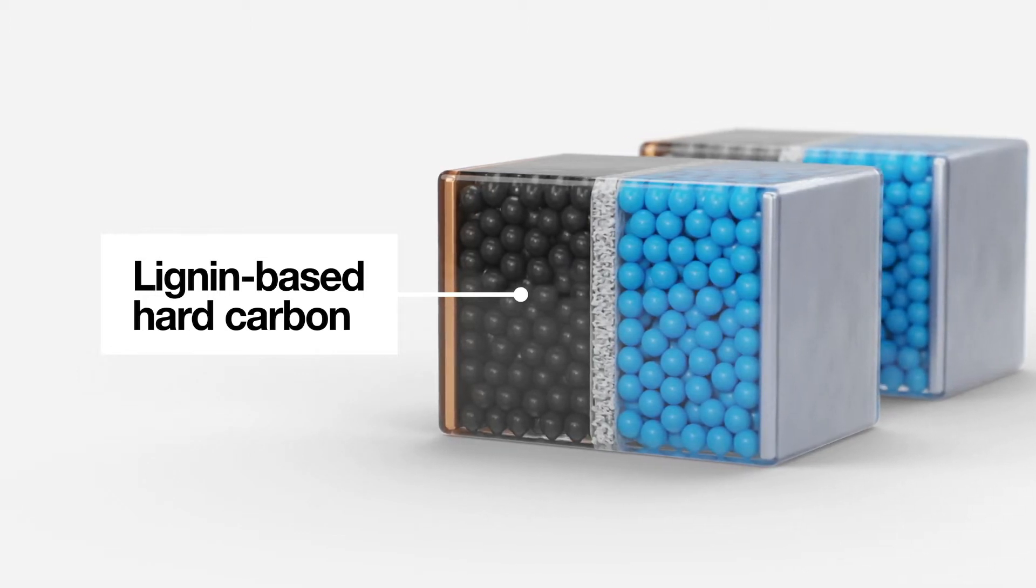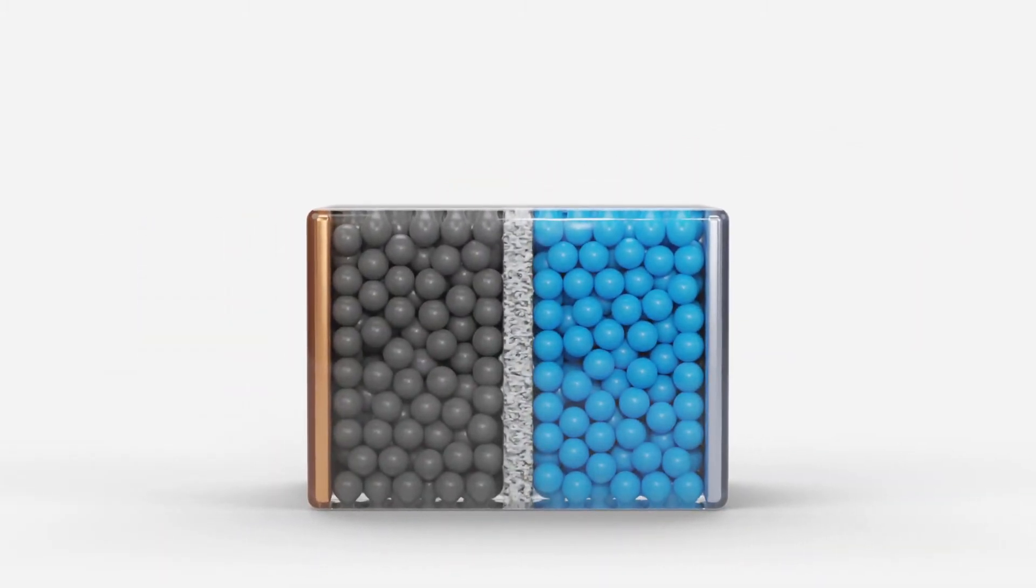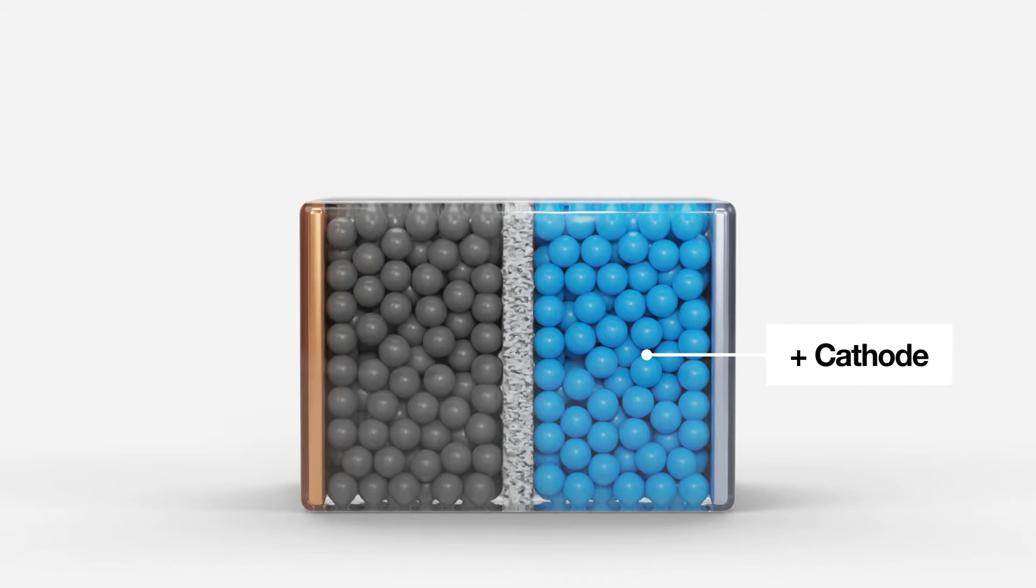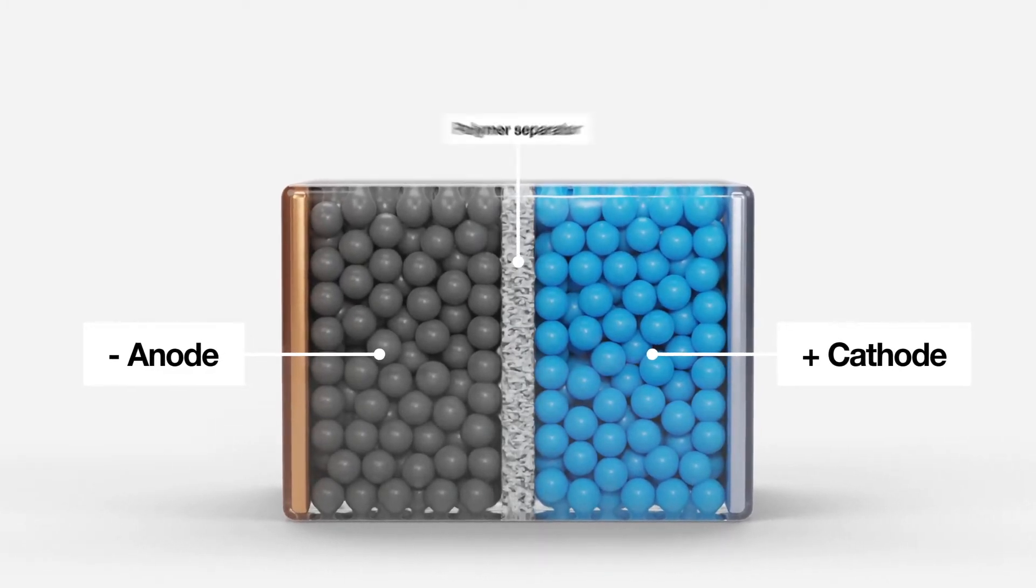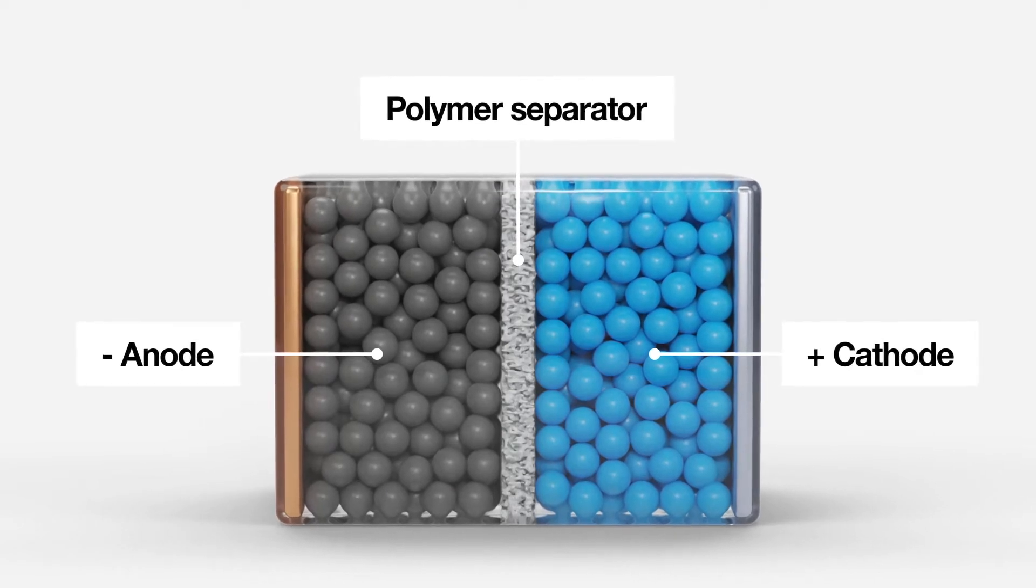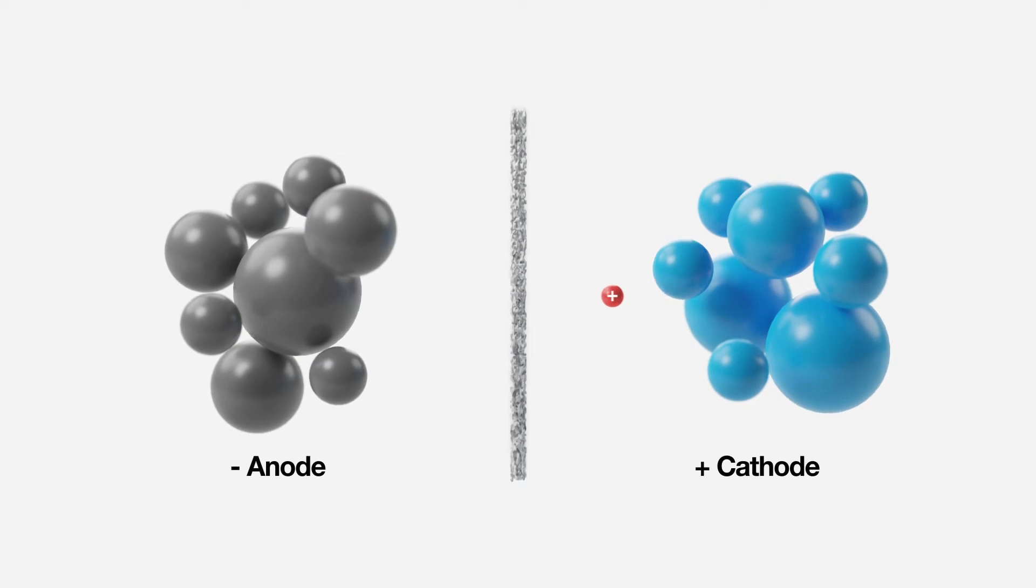To understand what this means, let's start by taking a look at how lithium-ion batteries work. A lithium-ion battery consists of a positive electrode, a cathode, and a negative electrode called an anode. In between these there's a polymer separator. When a battery is charged, lithium ions in the cathode move into the anode where they connect with graphite particles.